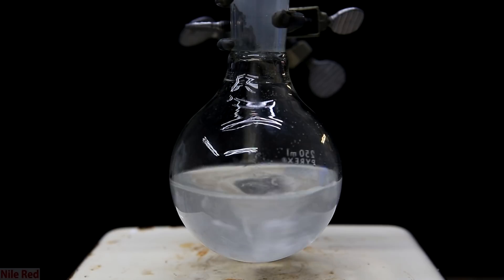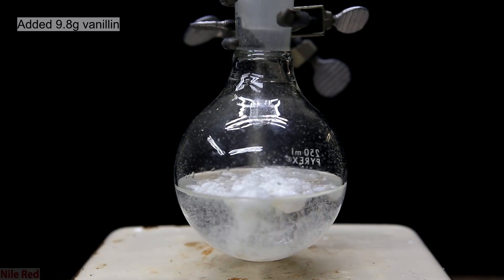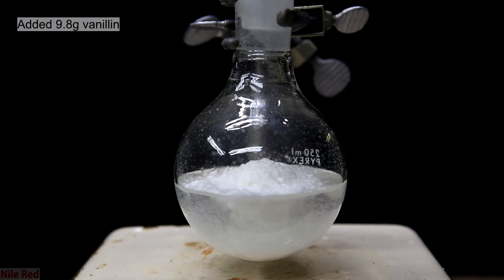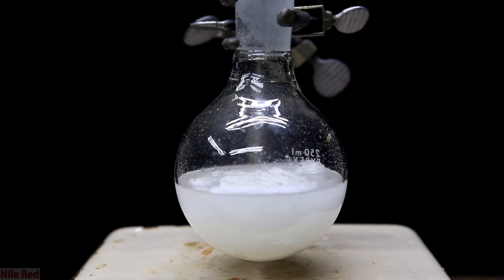The water will slowly clear up as everything dissolves and eventually we'll be left with a crystal clear solution. To this solution we dump in the 9.8 grams of vanillin. I start to stir the solution but it's going to become opaque because vanillin isn't very soluble in water.